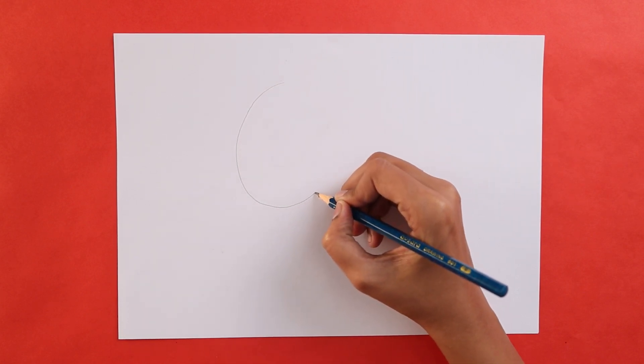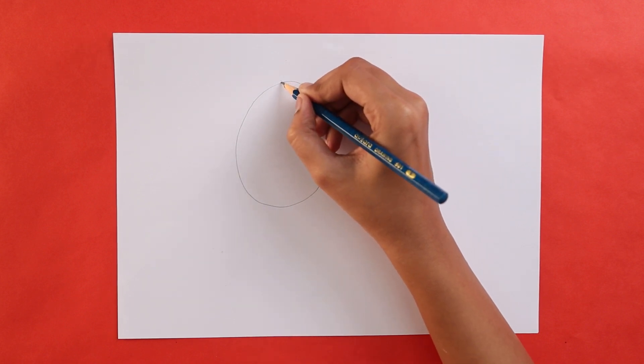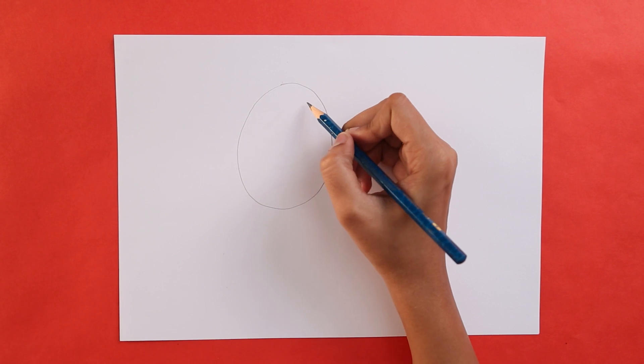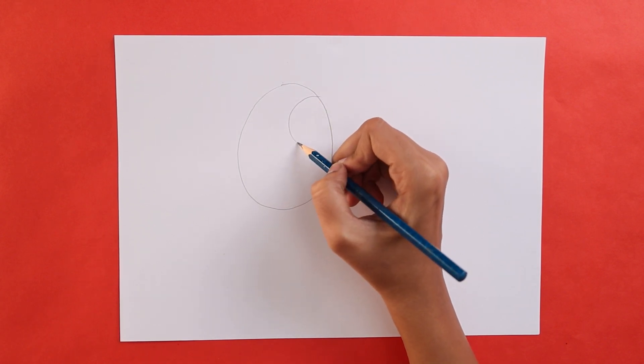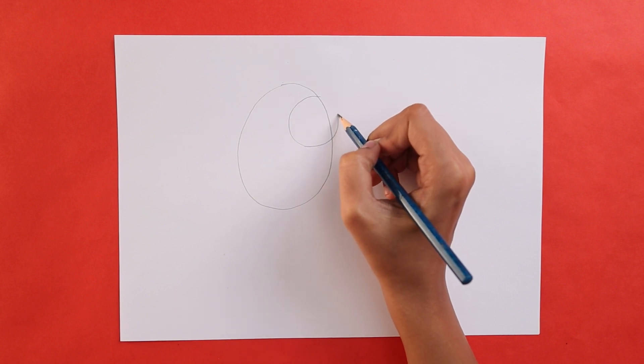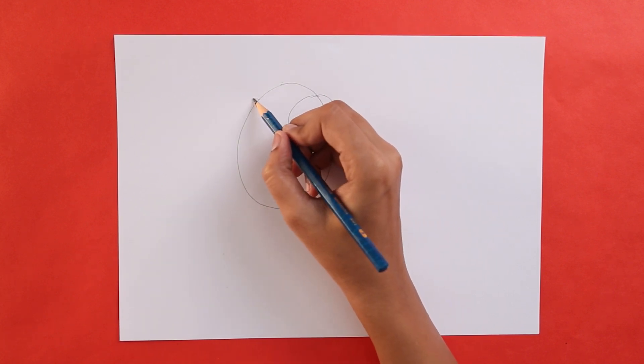We'll first start off by drawing an oval in the middle of the page. Then we are going to draw the eyes by making two big circles like this. Pretty easy, right?